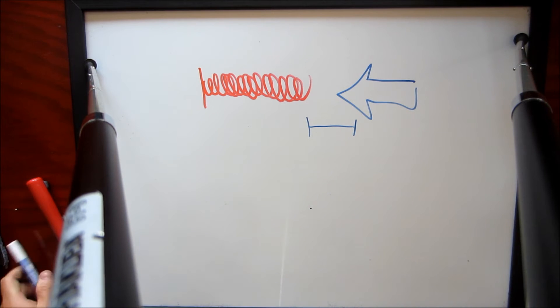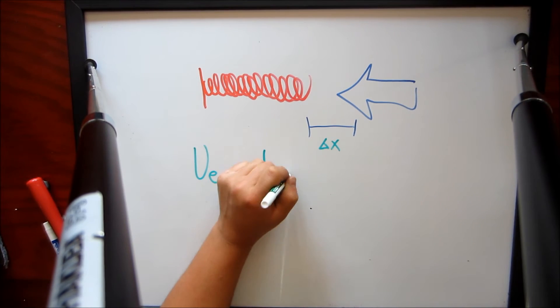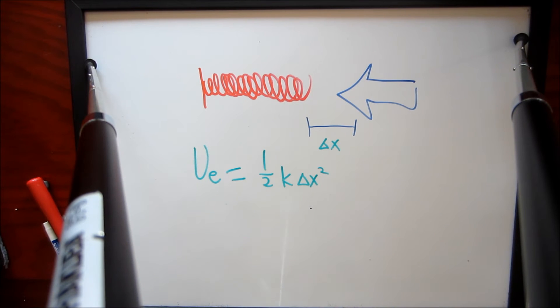The potential energy for this spring is one half K times x squared. As x squared goes up, the potential energy goes up as well.